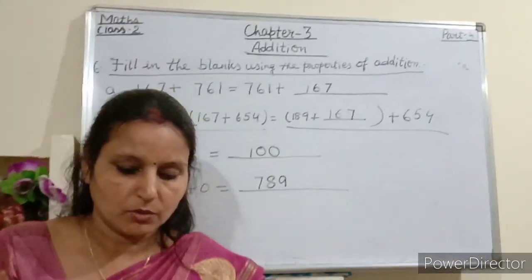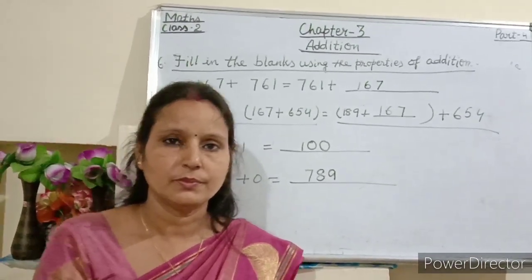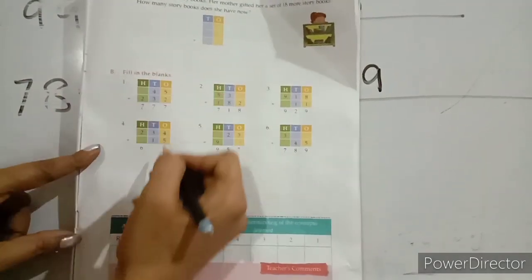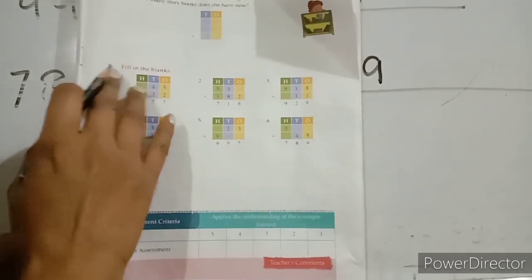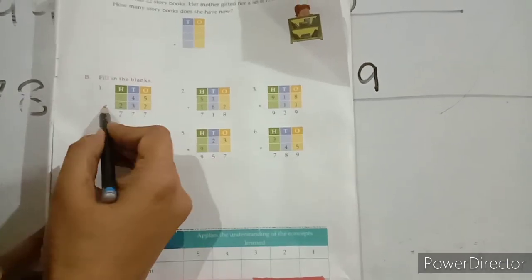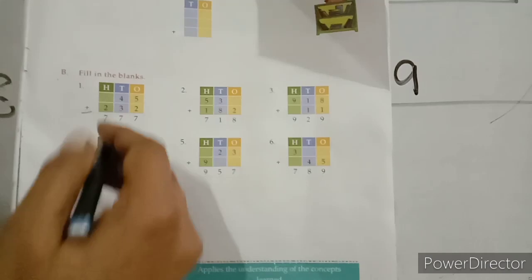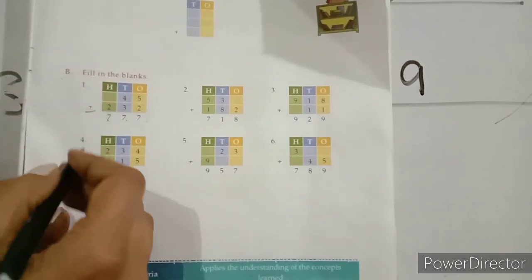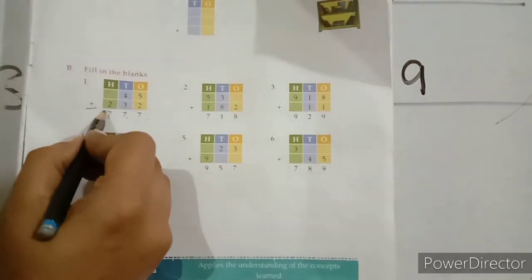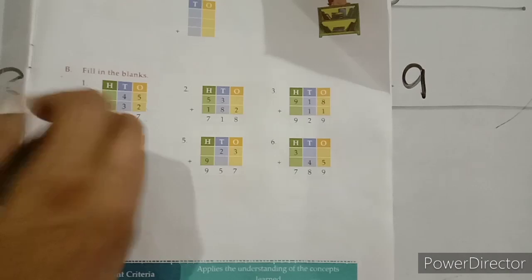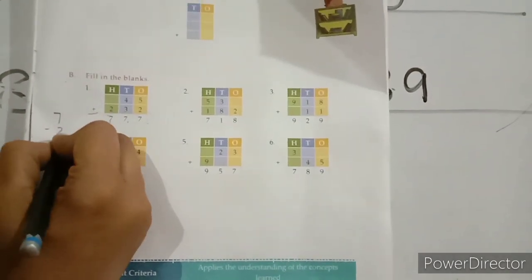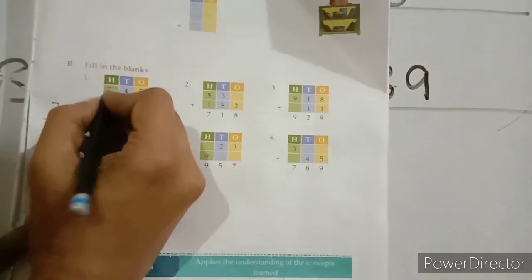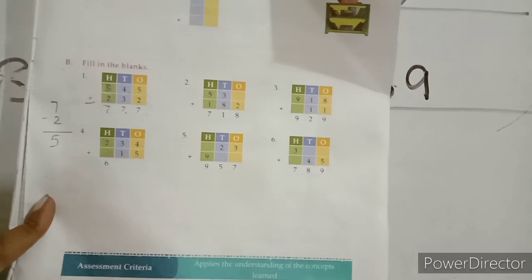Now I am giving you some questions from your application book. Worksheet 3.4, question number B: fill in the blanks. We have to add. 5 plus 2 equals 7, 4 plus 3 equals 7. Which number will we write so that the answer will be 7? We do 7 minus 2 equals 5, so we write 5 here. 5 plus 2 equals 7.